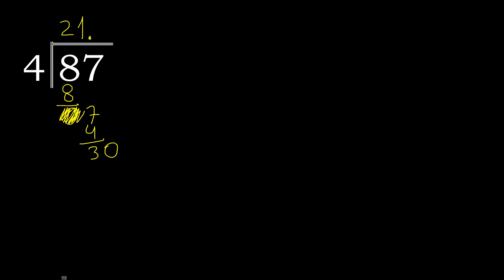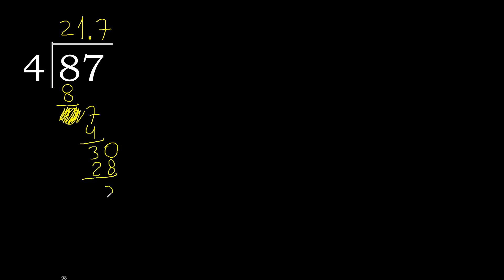4 multiply by 8 is 32. 32 is greater. Multiply by 7 is 28. Subtract, 2. Next.